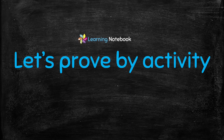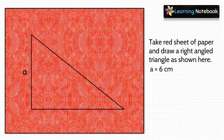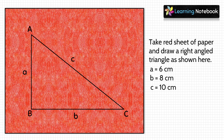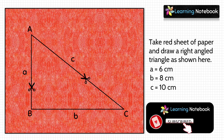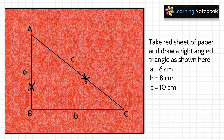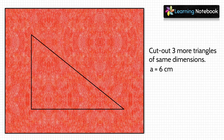Now let's prove the Pythagoras theorem with the help of an activity. In the first step, take a red sheet of paper and draw a right angle triangle on it as shown. Students, you can take a = 6 cm, b = 8 cm, and c = 10 cm, then cut this triangle with a pair of scissors. We need to cut out three more triangles of the same dimensions, so in total we need four such triangles.